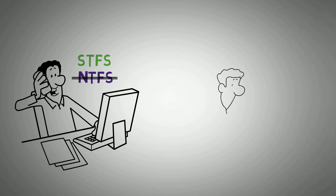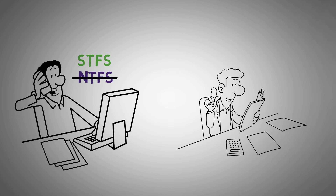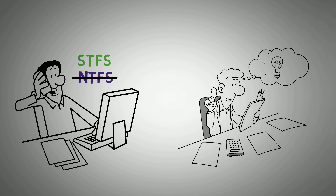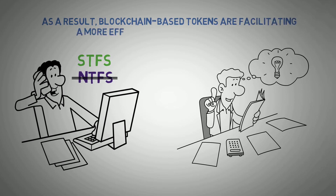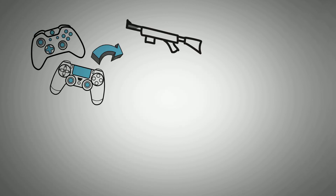Semi-fungible tokens present awesome perks. They allow crypto users to take advantage of the greater potential that non-fungible tokens present. Because semi-fungible tokens eliminate many of the problems associated with non-fungible tokens, users who want to trade NFTs but are limited by stumbling blocks can find a method to do so with SFTs. As a result, blockchain-based tokens are facilitating a more efficient transaction procedure. In semi-fungible tokens, accidental loss of tokens can be avoided. The game industry is an incredible example of SFT over NFT, as these tokens can be used to portray weapons or items in a game.